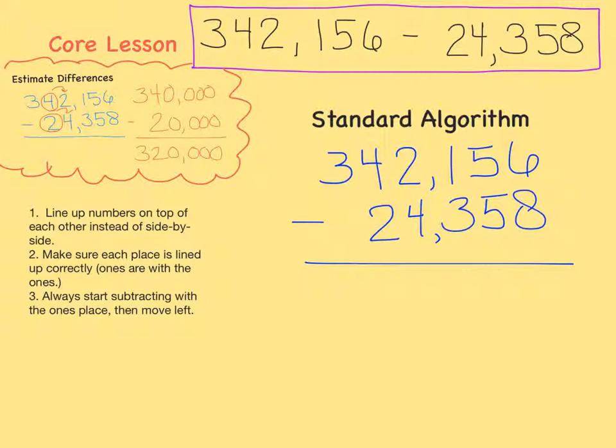That means we will have to regroup from the tens place. We have five tens, so let's take one of those so that there's four tens left. And now that one 10 that we took can be added to the six ones we already have. 6 plus 10 equals 16. Now we can subtract. 16 minus 8 equals 8. Make sure you write this 8 underneath the ones place.